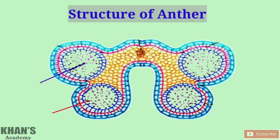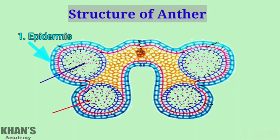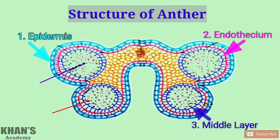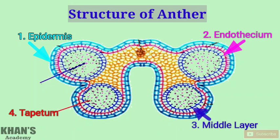If we take a transverse section of a mature anther, it shows a four-layer wall that protects the inner sporogenous tissue, which will make pollen tetrads. The first outer layer is the epidermis — a protective cover made up of tabular cells. The second layer is the endothecium, made up of radially elongated cells with fibrous thickenings. The third is the middle layer, made up of thin-walled cells that degenerate in the mature anther. The fourth and last layer is the tapetum, which is a very important nutritive layer that supplies nutrition to the sporogenous tissue inside.